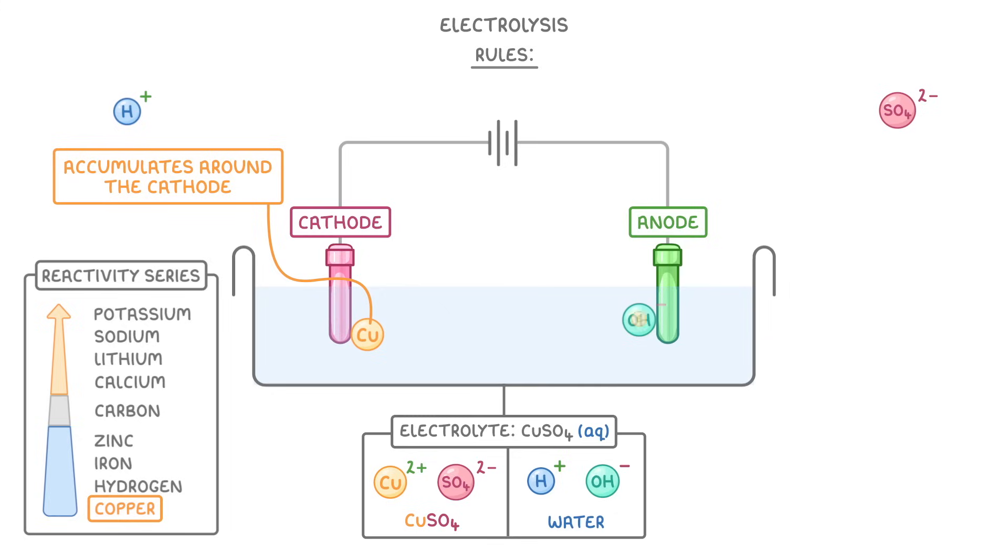So the hydroxide ions will give up their extra electron to the anode, and they actually go to form oxygen and water. The equation for this is that 4 OH ions go to form 2 H2O, 1 O2 molecule, and 4 electrons.